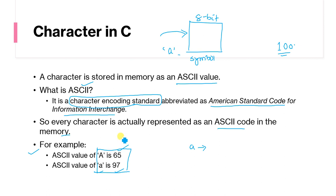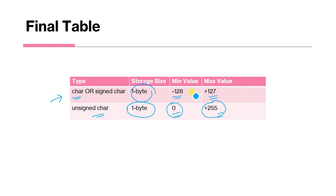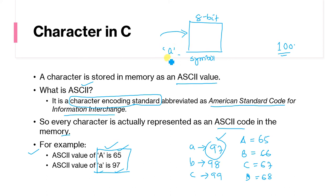Every character is represented by an ASCII code in memory. For example, capital A has ASCII value 65, and small a has ASCII value 97. You should remember these two values because ASCII values are assigned serially — so capital B is 66, C is 67, D is 68, and small b is 98, c is 99, and so on. That is why we discuss the range — because numbers are actually being stored, not the characters themselves.